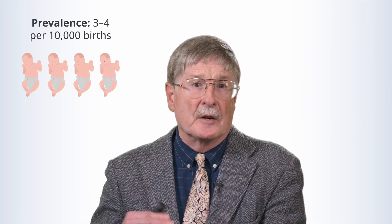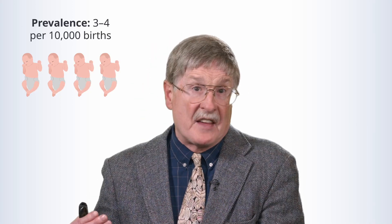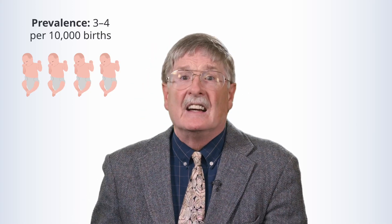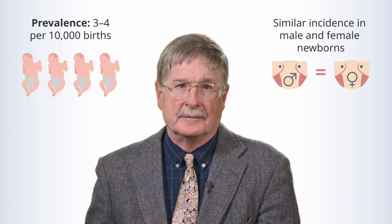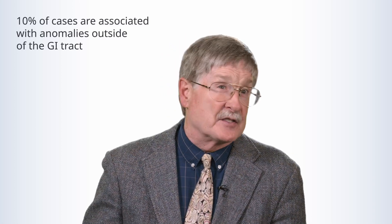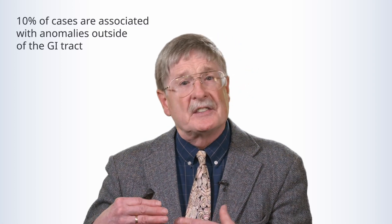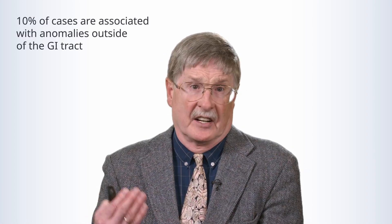For epidemiology, it's a relatively rare condition. Gastroschisis occurs in roughly three to four babies born out of 10,000 births, and there's a similar incidence whether the baby is male or female. In 10% of cases, gastroschisis is also associated with anomalies outside of the GI tract, which raises the specter of basic genetic defects.